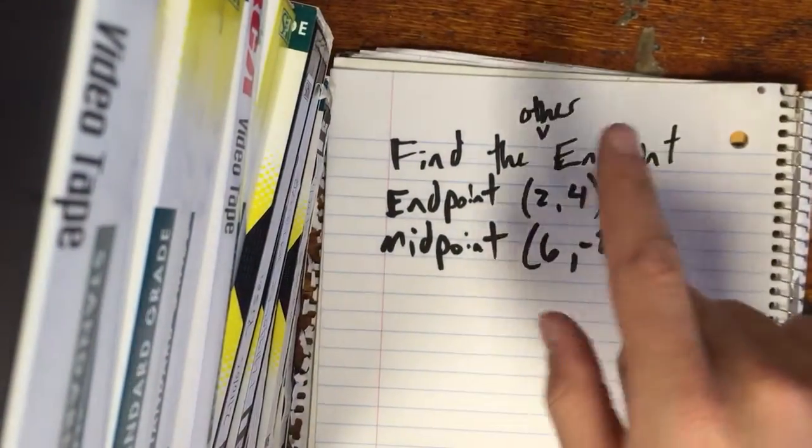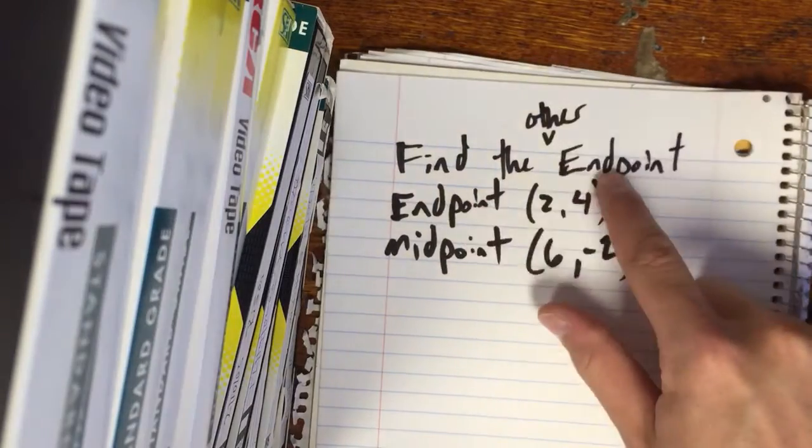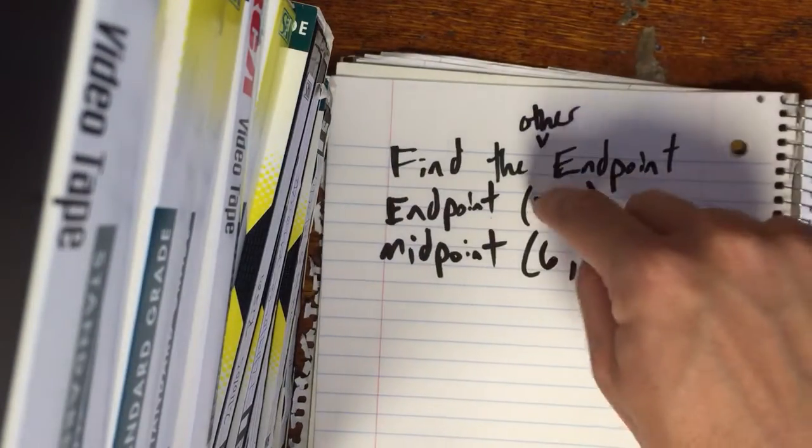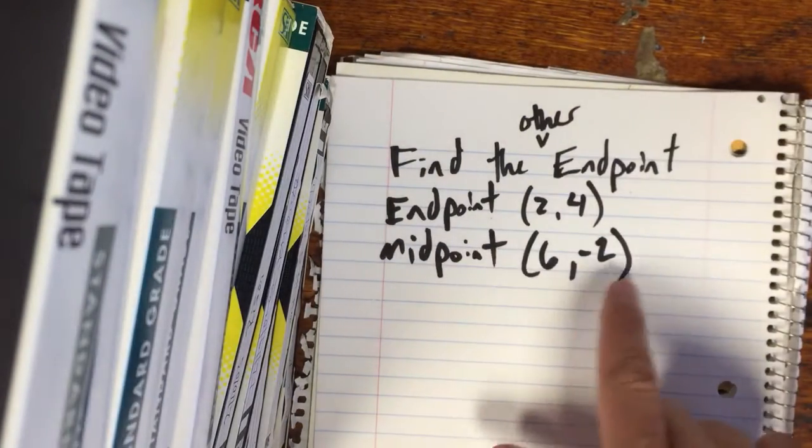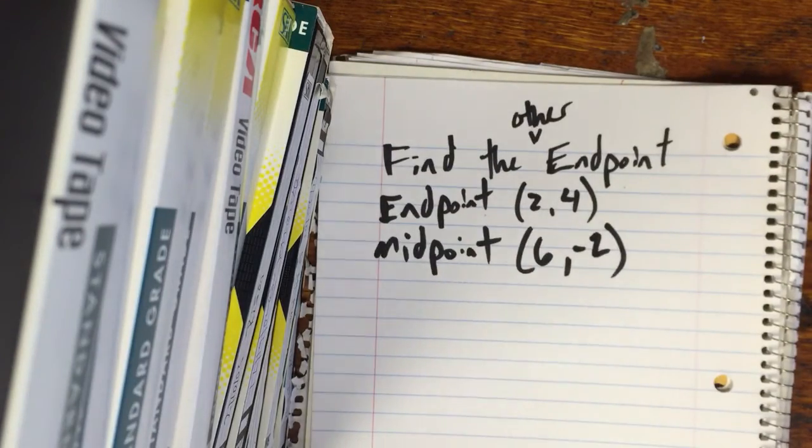So what we're doing is we're going to find the other endpoint if we know an endpoint is at (2, 4) and the midpoint is at (6, -2). Pause the video, give it a shot.